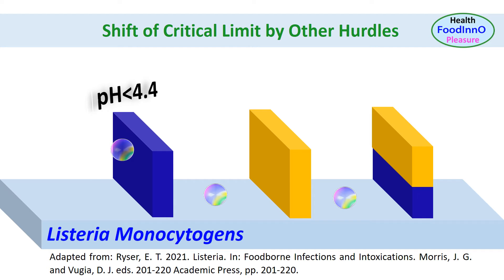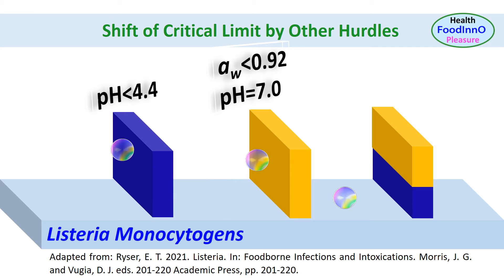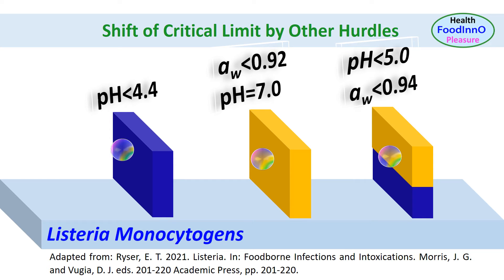We can consider one example using pH and water activity hurdles. In ready-to-eat foods, Listeria monocytogenes cannot grow below a water activity of 0.92 at optimum pH. If pH is less than 5, the critical water activity limit can be shifted to 0.94. Therefore, determining the critical limit without experimentation is a challenge when multiple hurdles are used.